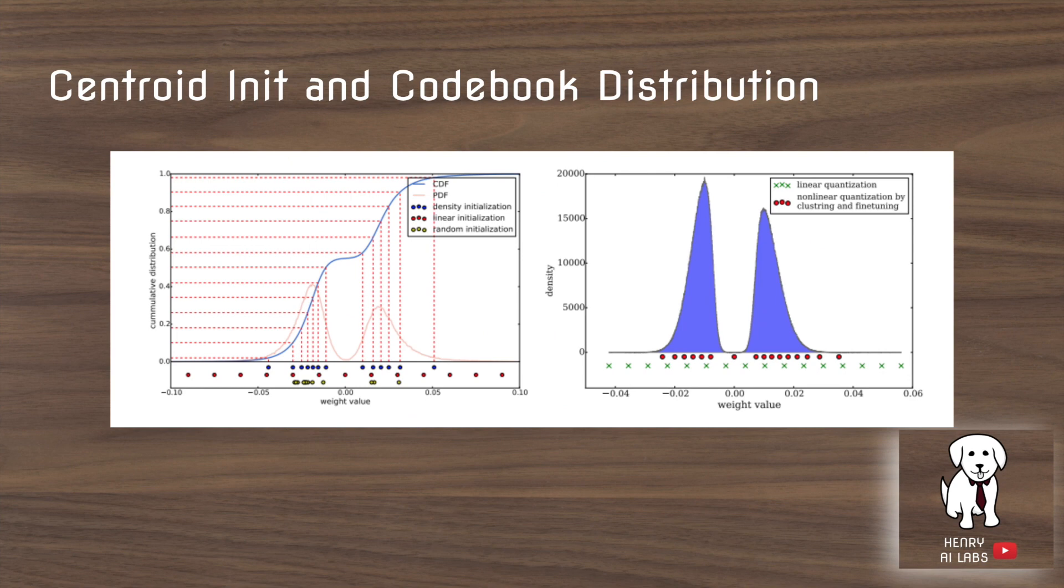This plot shows how the weights tend to be distributed and it's pretty interesting to see that they find they're in this bimodal structure where there are basically two Gaussians next to each other for the distribution of the weights in the deep neural network.